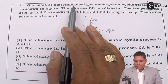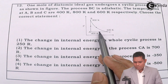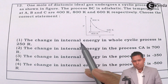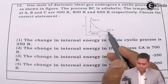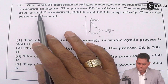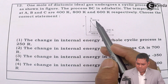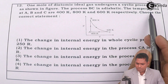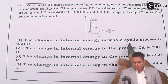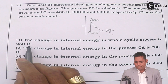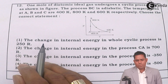One mole of a diatomic gas undergoes a cyclic process ABC — starting from A, it goes to B, then C, then comes back to A. The process BC is adiabatic. The temperatures at A, B, and C are 400 K, 800 K, and 600 K respectively. One of the options states that the change in internal energy in the whole cyclic process is 250R, but the change in internal energy in a cyclic process is always zero — that we must know.